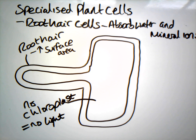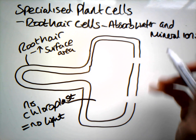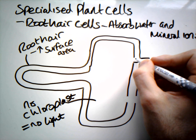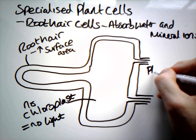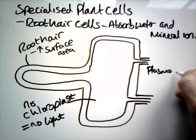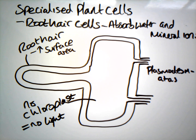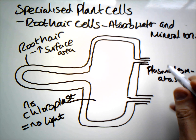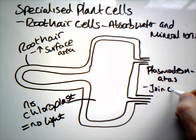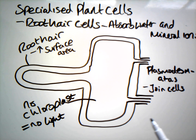A really cool structure we do have in our root hair cells is these special little pathways with a really cool name — they're called plasmodesmata. These are clear pathways from the cell's cytoplasm to an adjoining cell, which makes it easier to transport all the water and mineral ions absorbed from the ground towards the centre of the root where you'll find the xylem and the phloem.